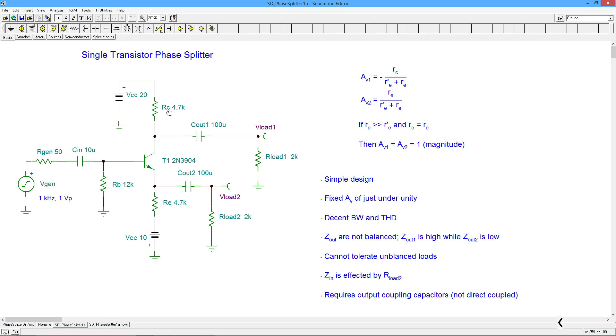Bandwidth can actually be pretty high all depending on the type of transistor and so forth. The output impedances are not balanced. If you remember from your common emitter and common collector studies, the common collector output impedance, in other words, what our load number one sees. I'm sorry. I said common collector. I meant common emitter. What the R load number one sees in the common emitter configuration is RC, the 4.7 K as the output impedance.